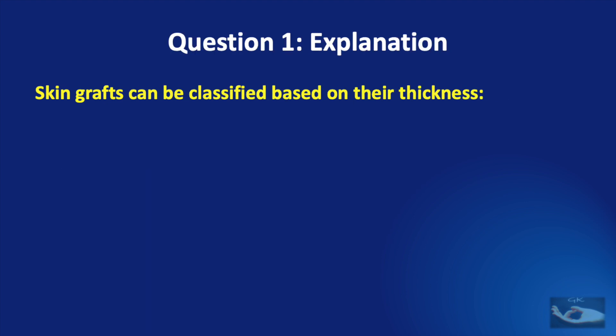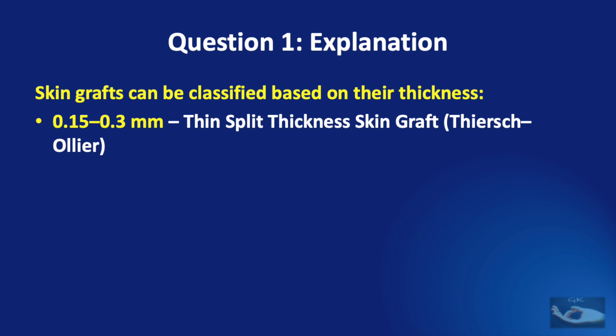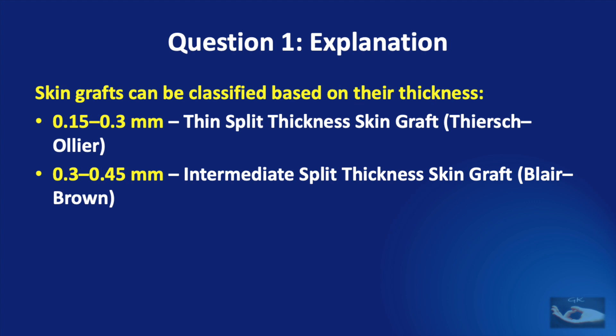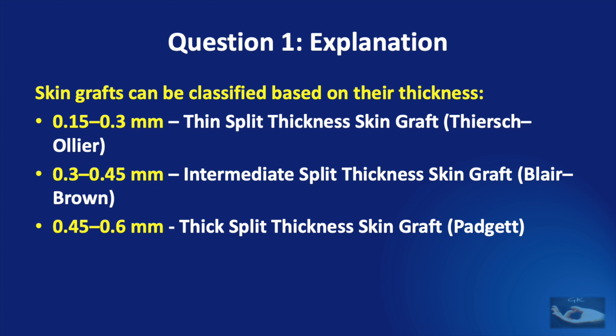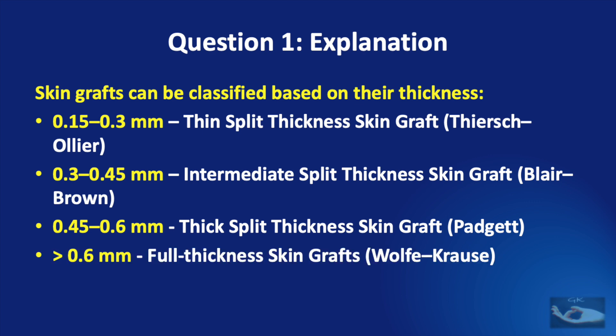Skin grafts can be classified based on their thickness. 0.15 to 0.3 mm corresponds to thin split thickness skin graft, known as the Thiersch-Aulier graft. Grafts of 0.3 to 0.45 mm correspond to intermediate split thickness skin graft, or the Blair-Brown graft. Skin grafts of 0.45 to 0.6 mm are thick split thickness skin grafts, or the Padgett graft. Skin grafts more than 0.6 mm correspond to full thickness skin grafts, known as the Wolf-Cross graft.